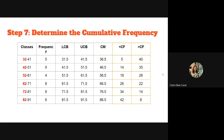For greater than cumulative frequency, it shows the number of observations greater than the lower class boundary. Start with the highest class interval (82–91), whose frequency is 6. Then add going upward: 6, 6+8=14, 14+8=22, 22+4=26, 26+9=35, 35+5=40. Both cumulative frequencies end at 40, confirming correctness.